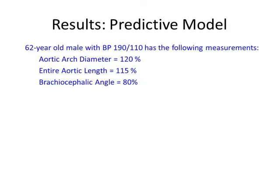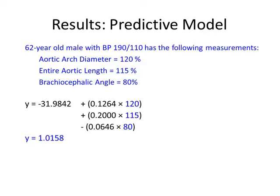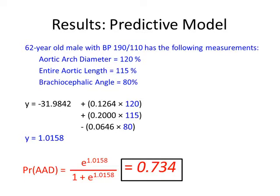Here's an example of how one may use the predictive model in the clinical setting. If we have a 62-year-old gentleman with a blood pressure of 190 over 110, with an aortic arch diameter of 120%, entire aortic length of 115%, and brachiocephalic angle of 80% — all relative to normotensive patients at 100% — we apply these values to get a Y coefficient of 1.0158, which is next applied into the probability equation, telling us that this patient has a 73.4% chance of developing a type B AAD. Therefore, based on retrospective data, we can assess that this patient has a high risk of AAD development based on anatomic variables alone.